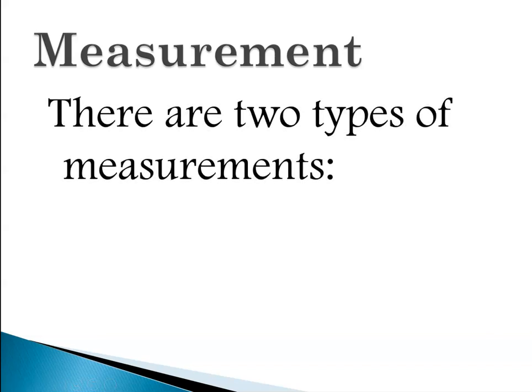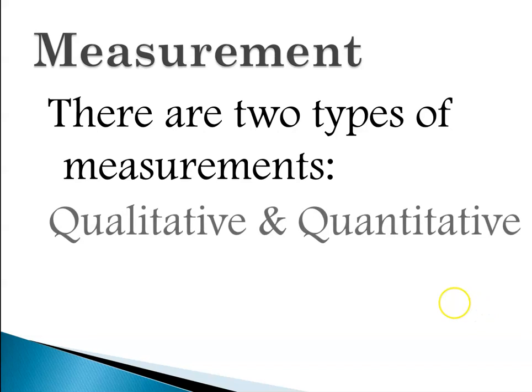There are two types of measurements: qualitative or quantitative. For a qualitative measurement I might say, 'that pencil is blue, it's a pretty shade of blue,' or I'll look at my daughter and say she looks sick today. A quantitative measurement would be that the blue pencil has a corresponding wavelength of 460 nanometers, or my daughter has a fever of 101.2 degrees.